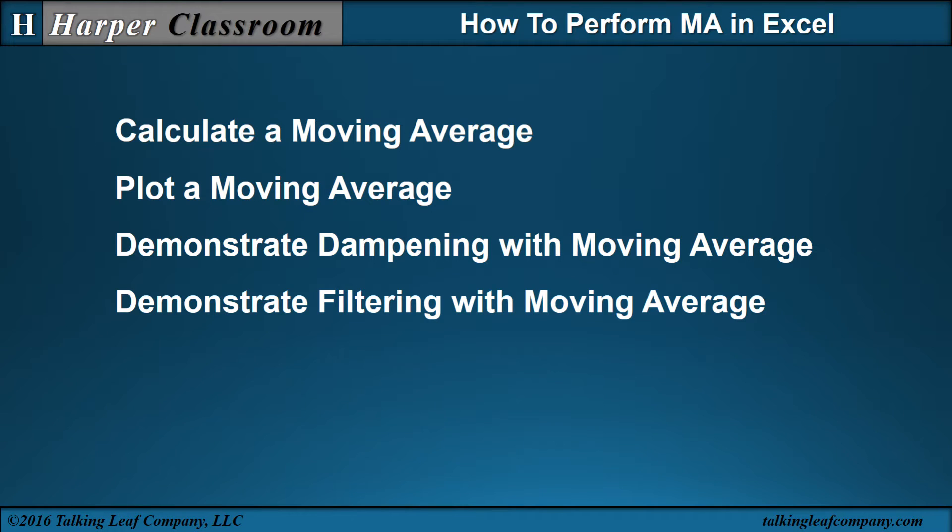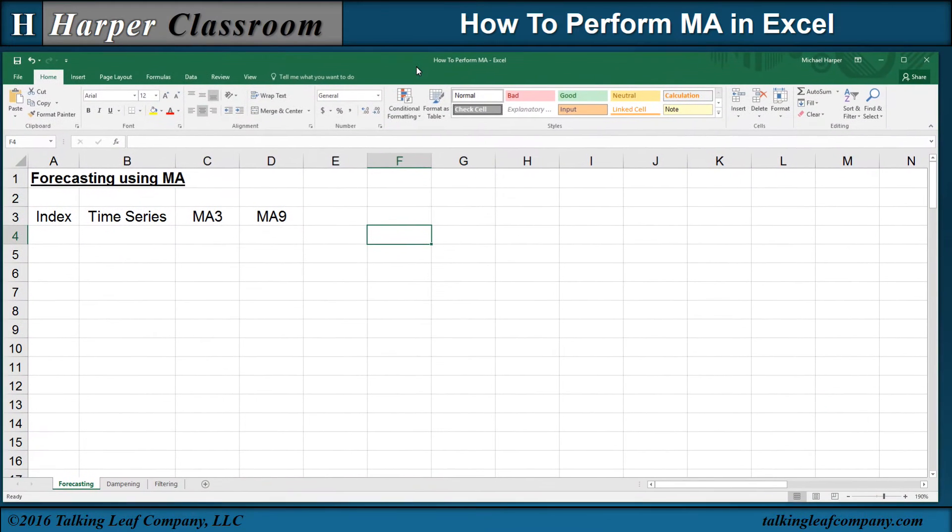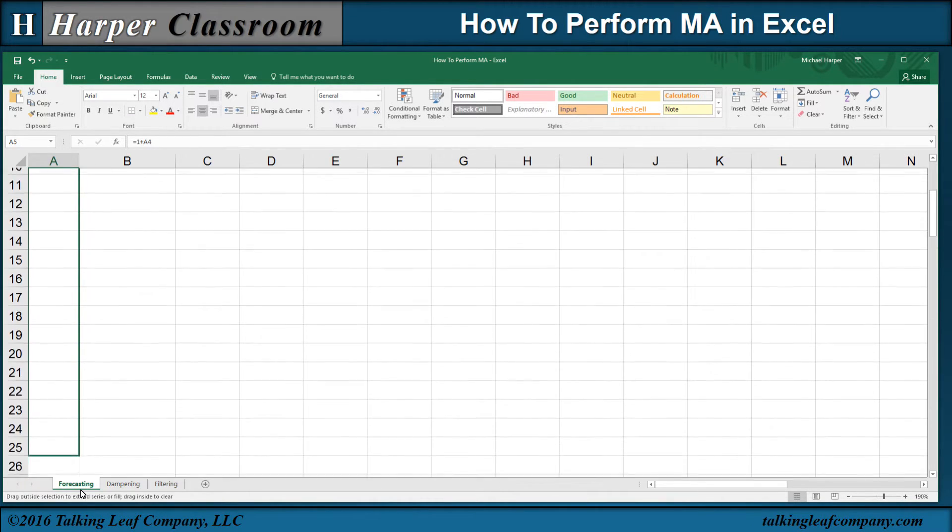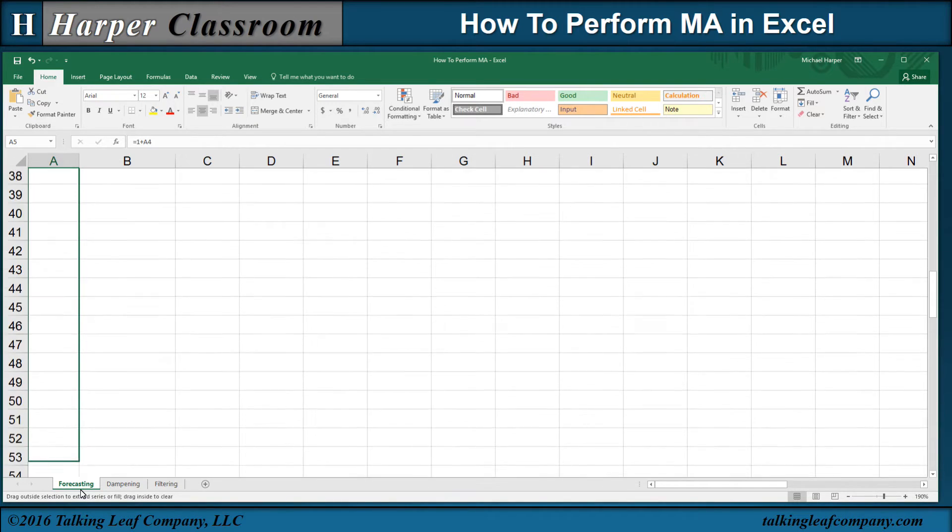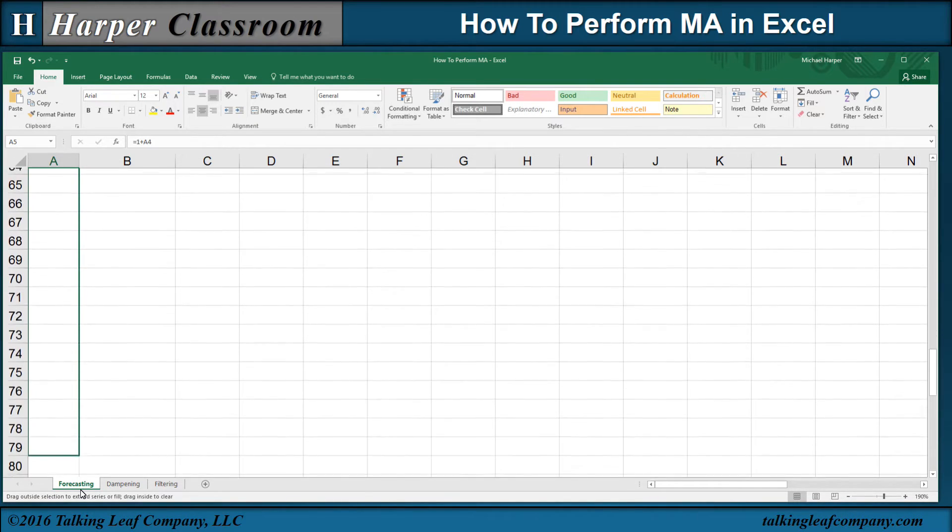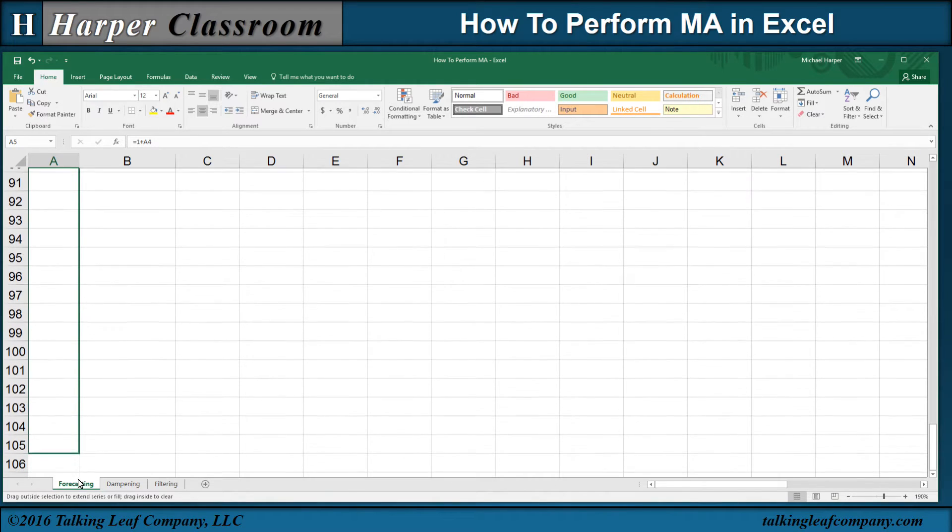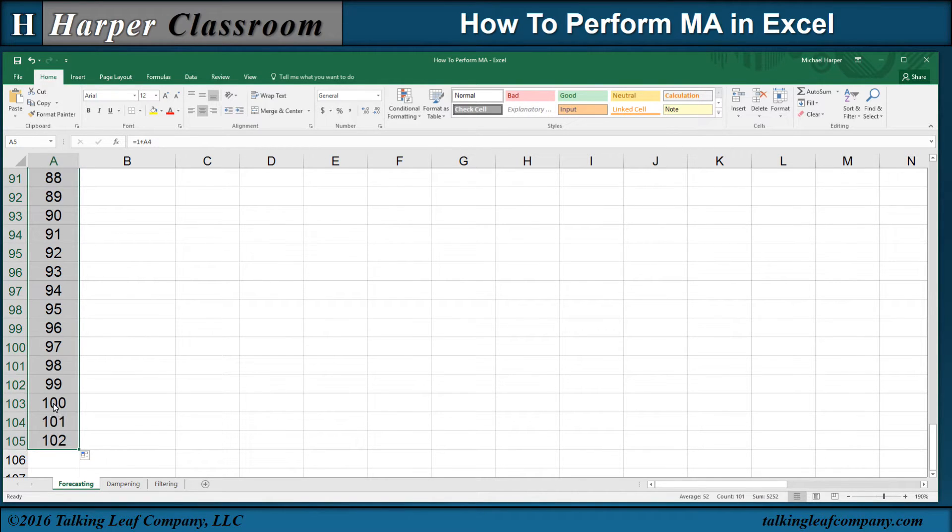So let's bring in Excel. We'll start with an index, and we'll start with time 1 equals 1 plus 1 is 2. And I can drag this down and have as many time periods as I want. Let's have a large number so we can see the character of our time series. Let's stop at 99. Let's have 99 time periods.